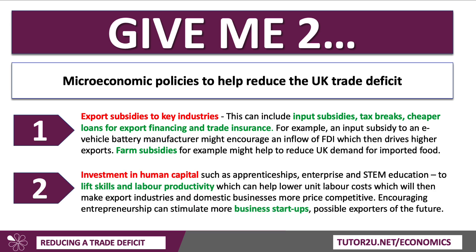A second micro approach would focus on the labour market: invest in human capital — apprenticeships, enterprise education, STEM subjects — designed to improve human capital, lift skills and increase labour productivity, which in turn can help lower unit labour costs. This will help make industries that want to export more competitive, as well as those firms facing import competition. Critically, at a micro level, encouraging entrepreneurship can stimulate more business start-ups — in fintech, life sciences, creative industries — which might be possible exporters of the future. The UK has a comparative advantage in creative arts, film and television, video gaming, and online content. At a micro level, those are now major exporters, so if you get that right, you can improve your trade balance.